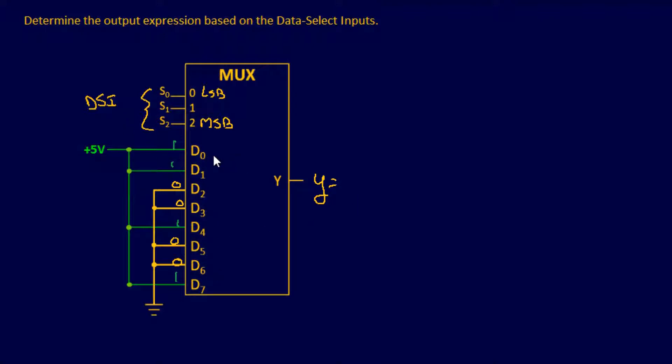So we have this guy right here. To select this data point right here, it would give you a high output. So if you're able to select d0, it would give you a 1. The way to do that is choose your data select inputs accordingly.